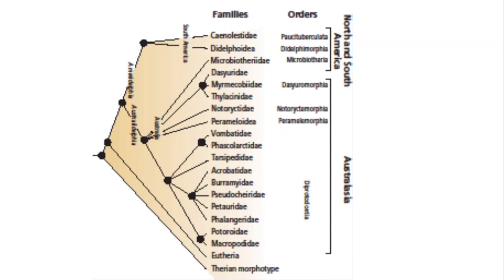We talked briefly about the major groups of marsupials. Only the didelphids show up in North America, but in South America you have microbiotherids, didelphids, and caenolestids — so the marsupial fauna in South America is pretty rich. When you look at marsupials, you can see all these ecological correlates: they fill the same sort of ecological niches that eutherians do.